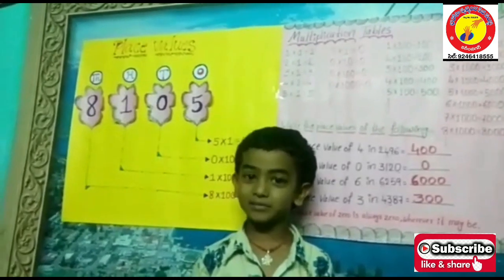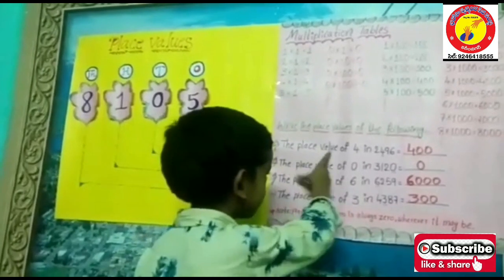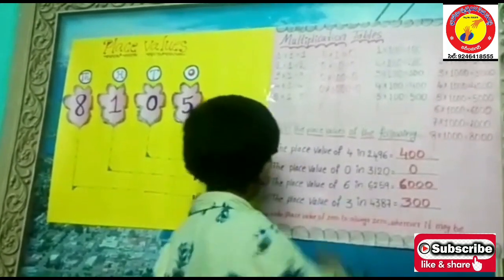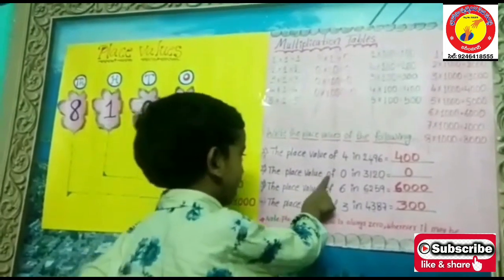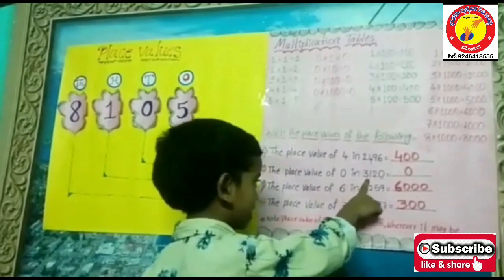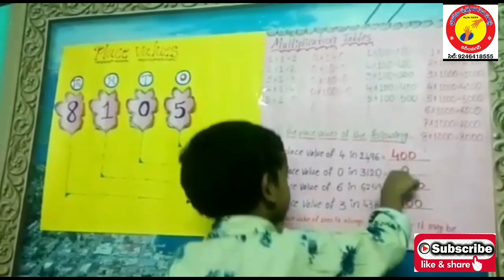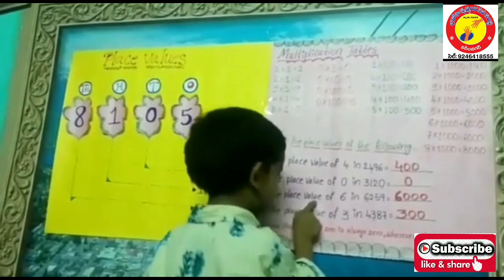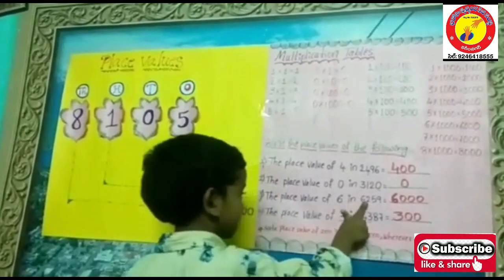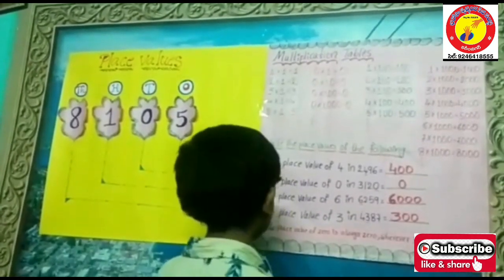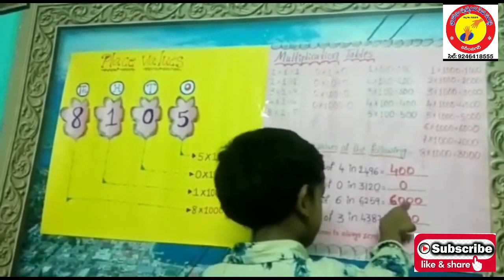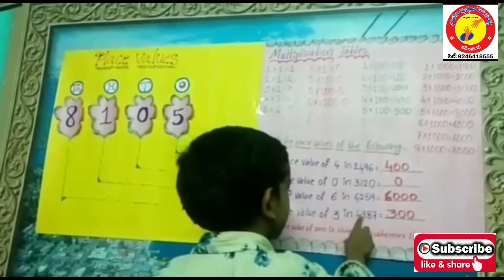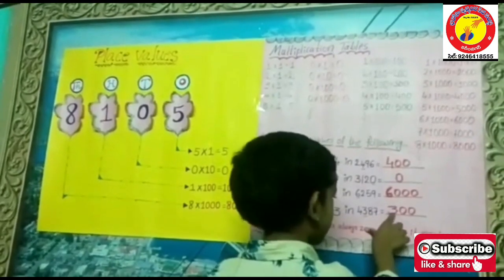Here we have some more examples. First one: the place value of four in two thousand four hundred ninety-six. The place value of six in six thousand two hundred and fifty-nine is equal to six thousand. The place value of three in four thousand three hundred is equal to three hundred.